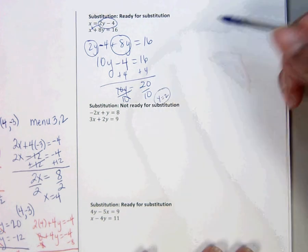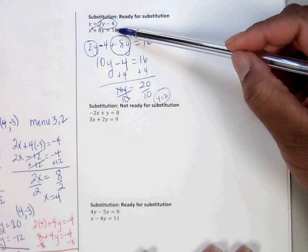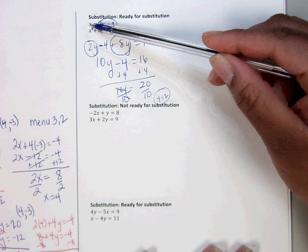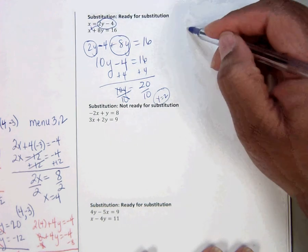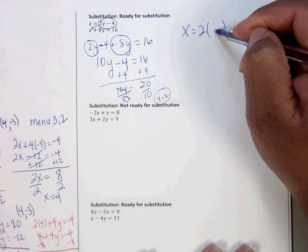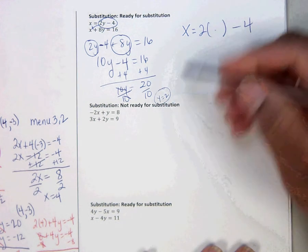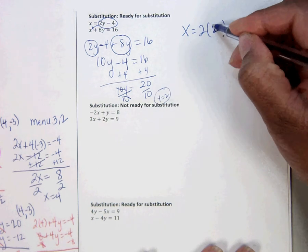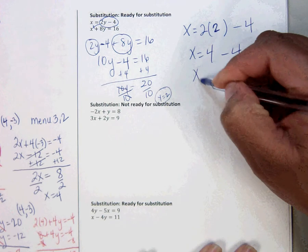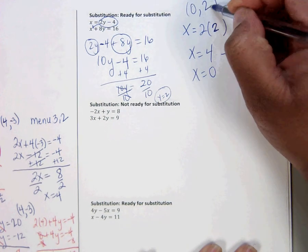Now I'll take the 2 and plug it into either one of these equations. I'm going to plug it into the top one because it's already solved for x, and that's what I need. So x equals 2y goes there. So I'm substituting in 2. This is the substitution method. 4 minus 4 is 0. So the answer should be 0, 2.